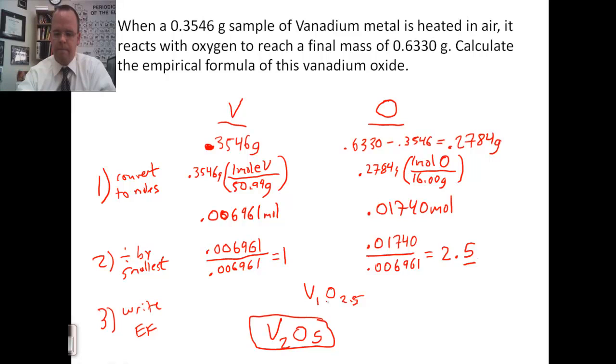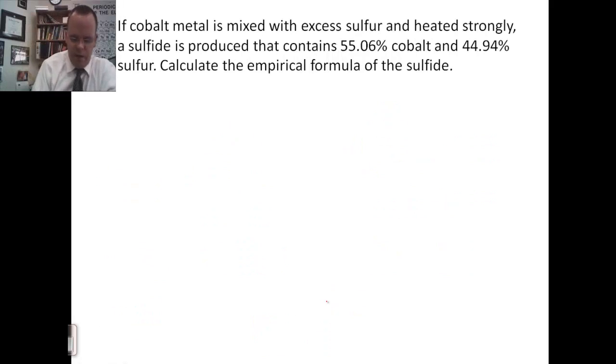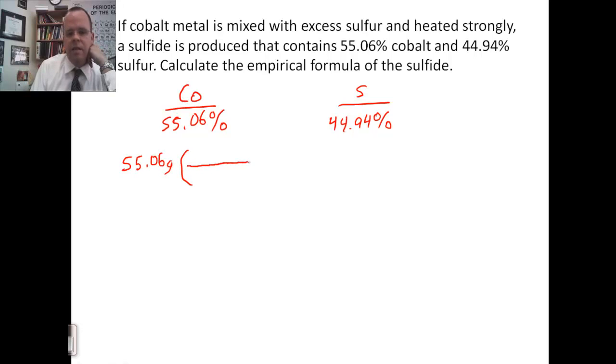Okay, let's look at another example of this. Cobalt metal is mixed with excess sulfur and heated strongly. A sulfide is produced that is 55.06% cobalt and 44.94% sulfur. We want to find the empirical formula. Now, in each of these cases, we can treat the percentages as grams because in any of these problems, you could have any total mass of your compound to start with. So, if I had 100 grams, 44.94% of 100 is 44.94. 55.06% of 100 is 55.06. So, if I make it out of 100 grams, I can just use the percentages as grams. Now, what I would do is recommend that you pause the video, try this problem, and then press play again and see my answer.